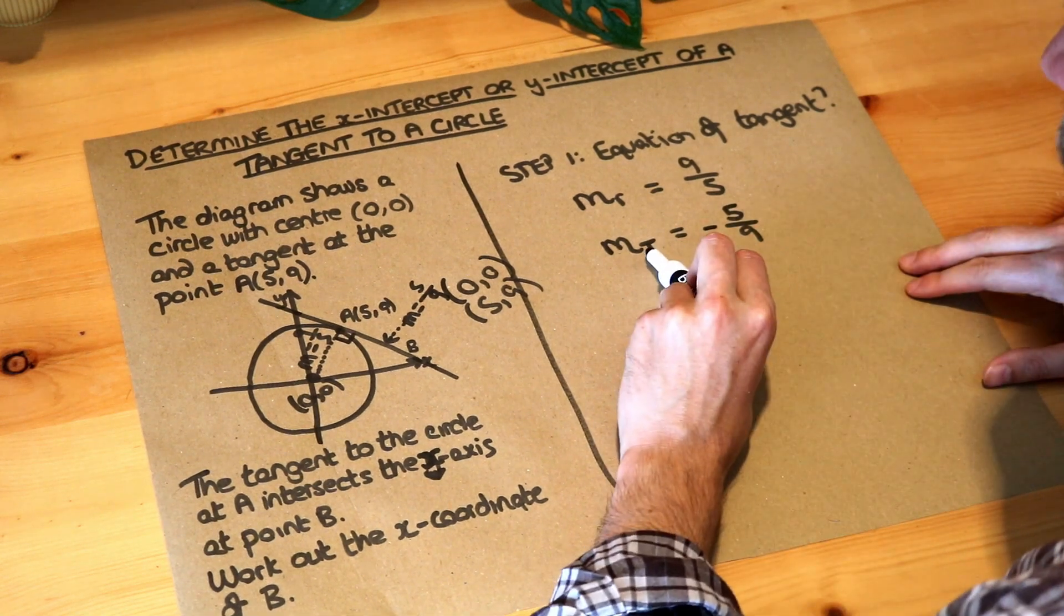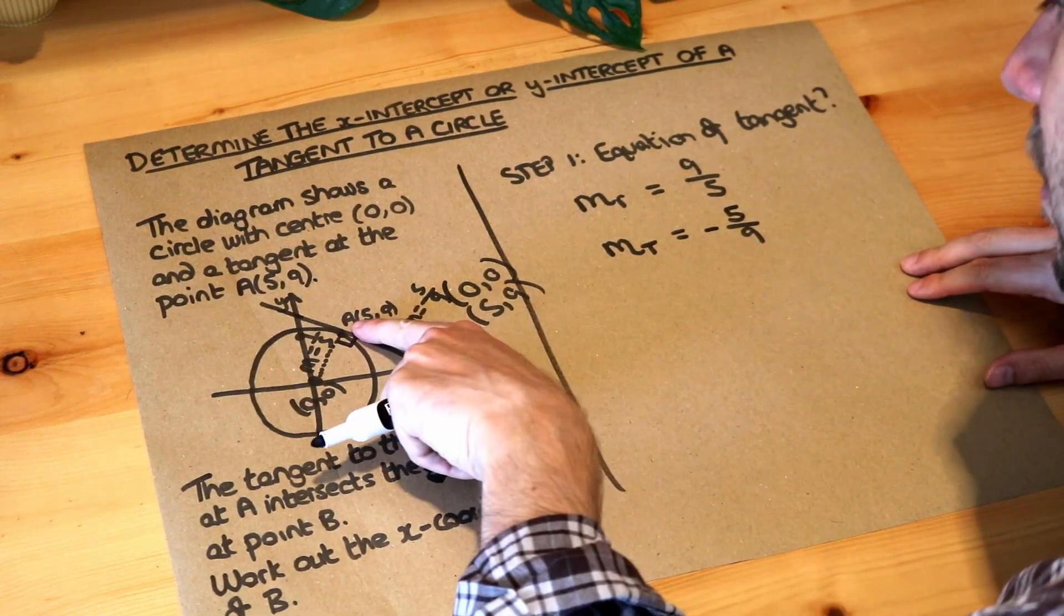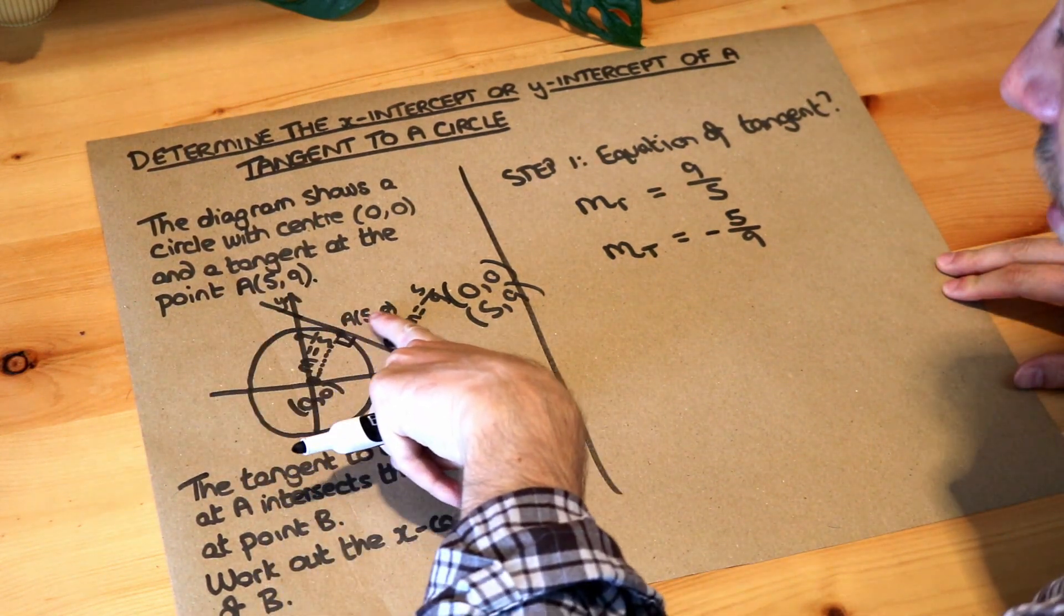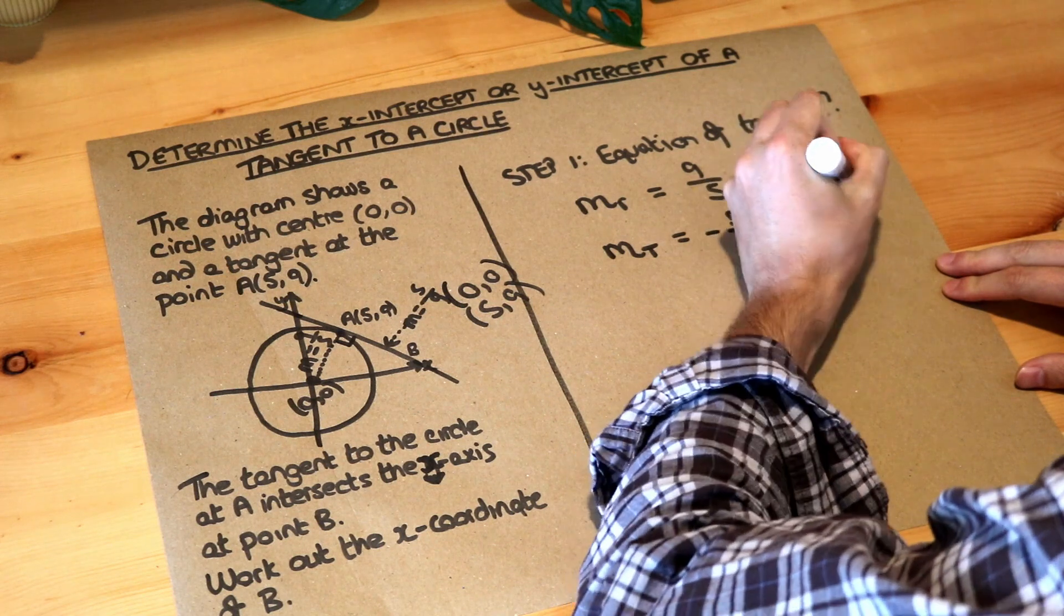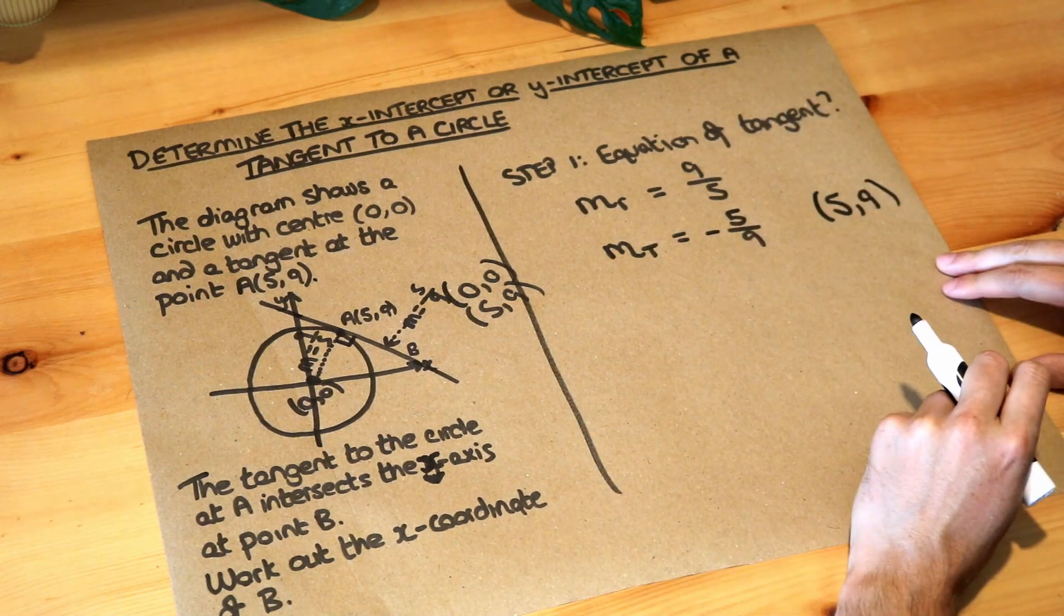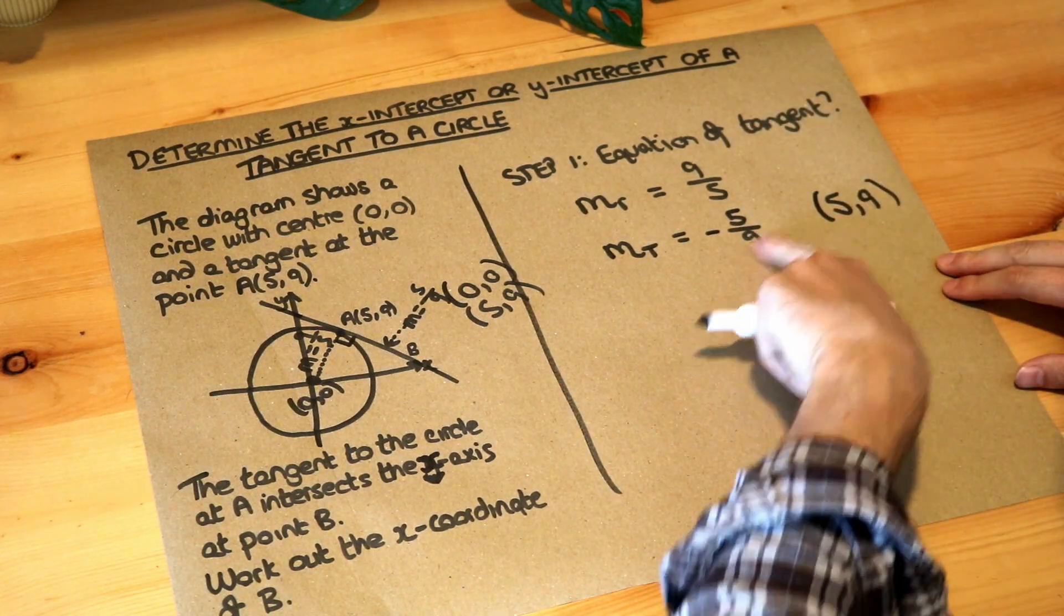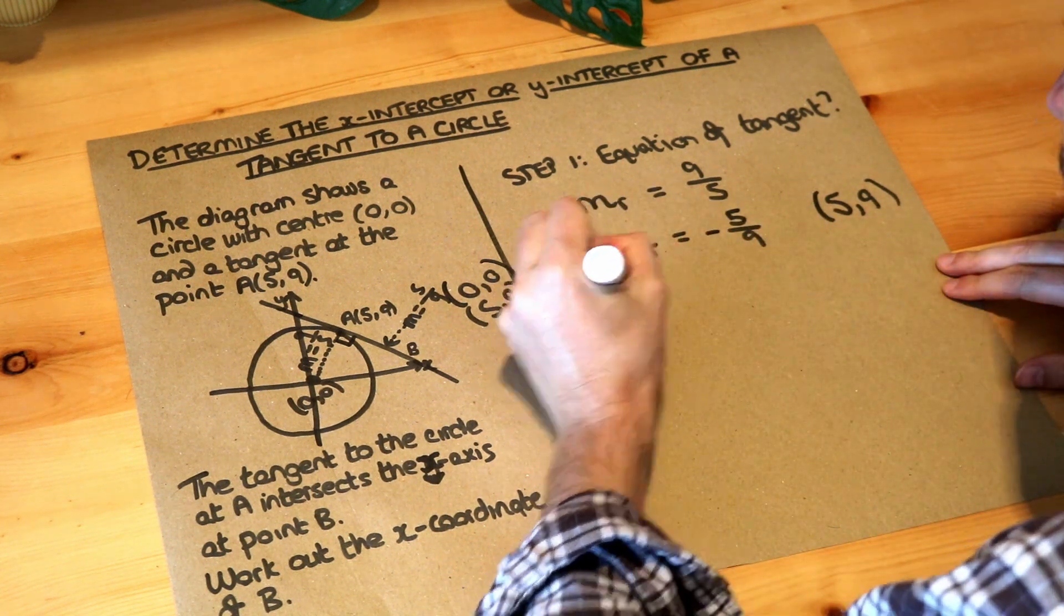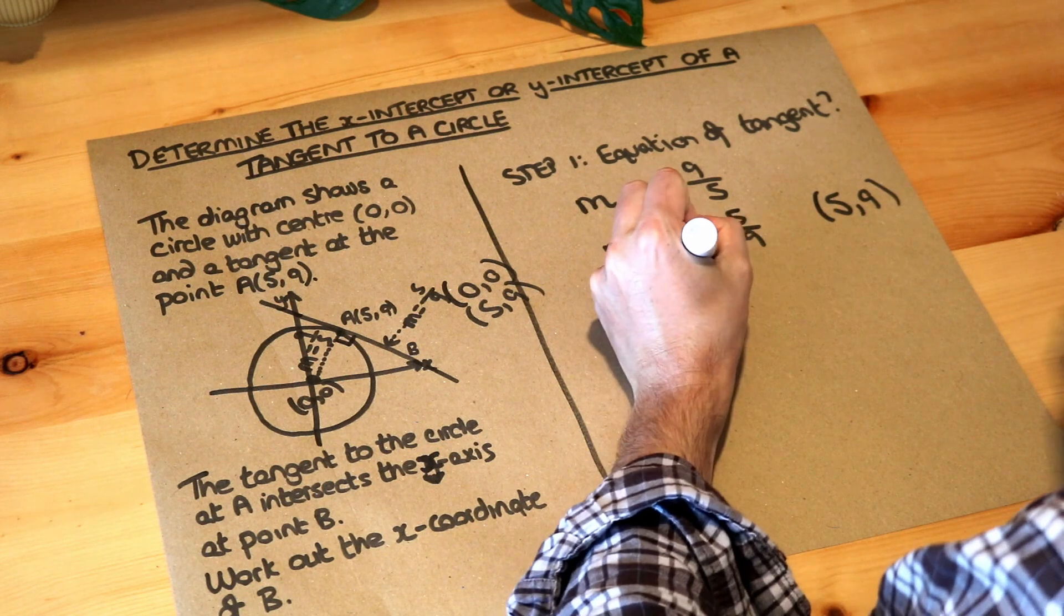Now we know the gradient of this line is minus 5/9. We've also got a point on this line. We know that A, which is (5,9), lies on that line. So we just need to find the equation of the line, which has that gradient and goes through that point. Well, we start with y equals mx plus c. That's the general equation of a straight line.